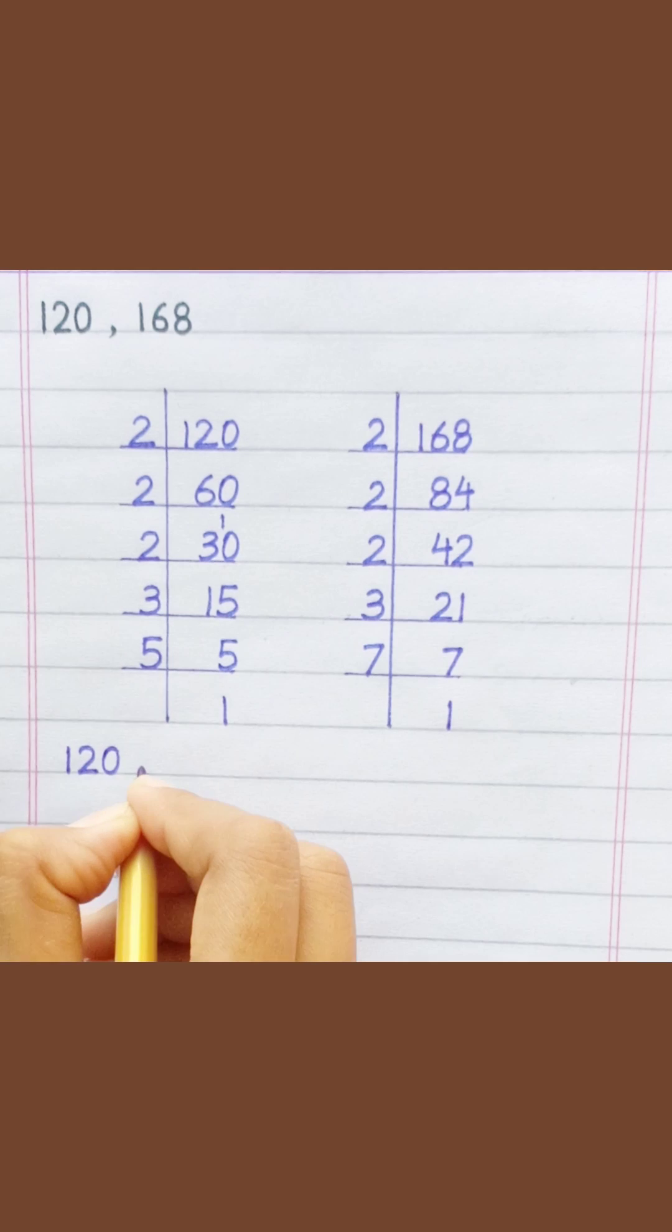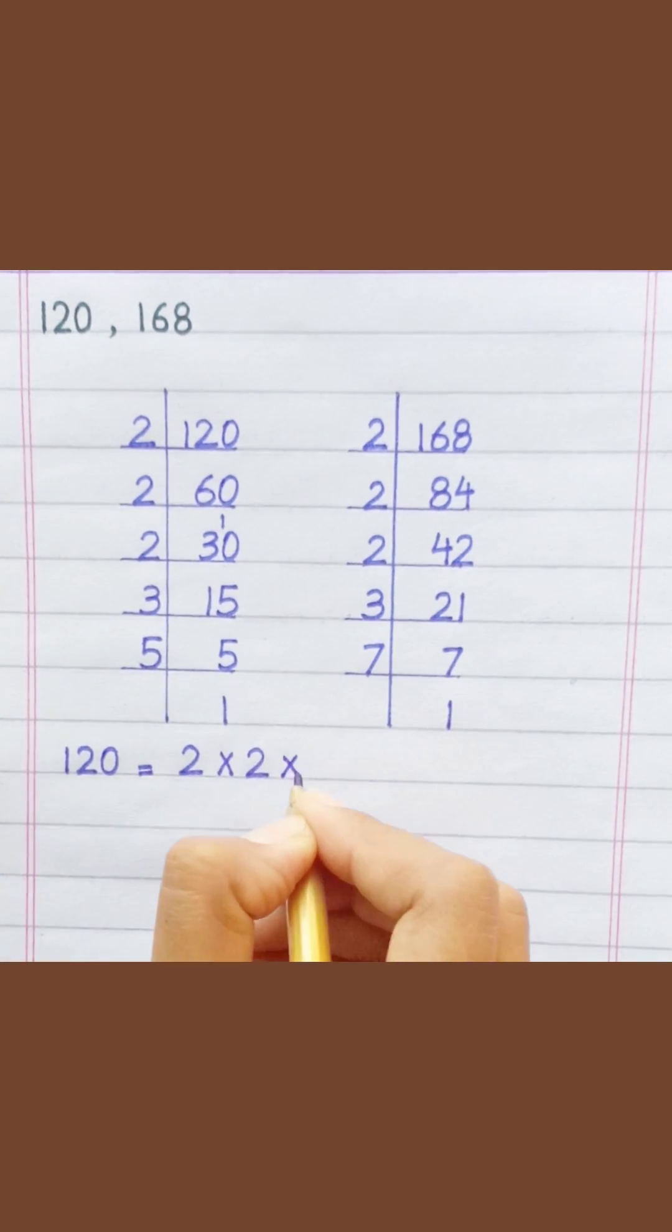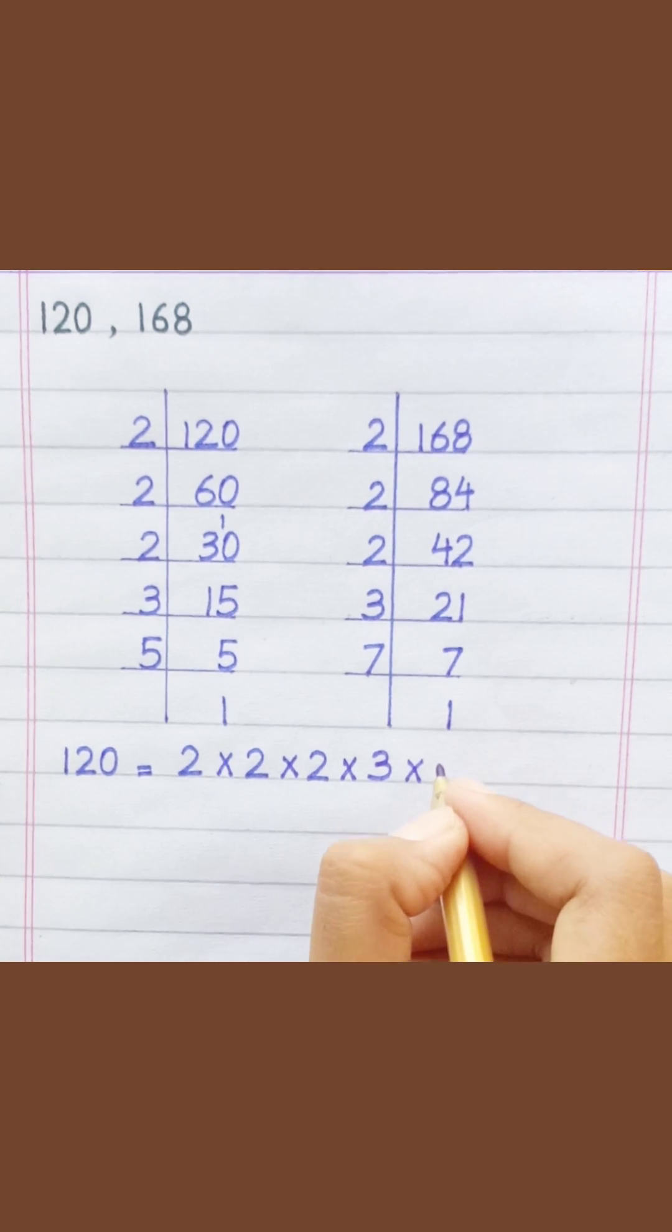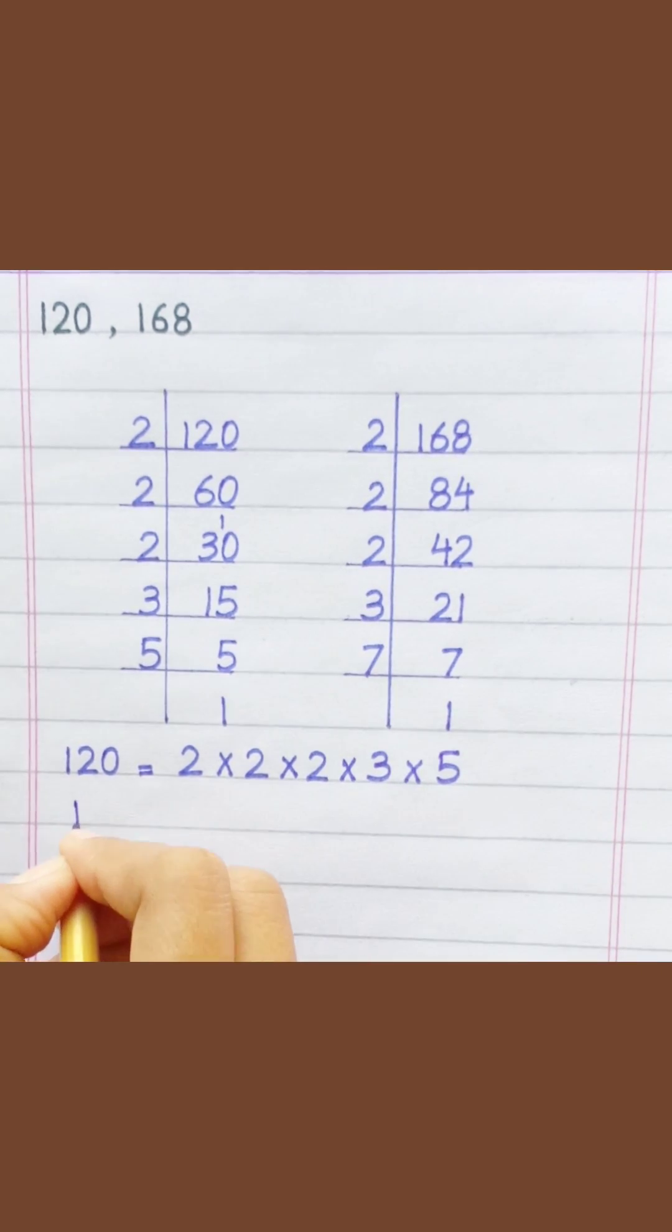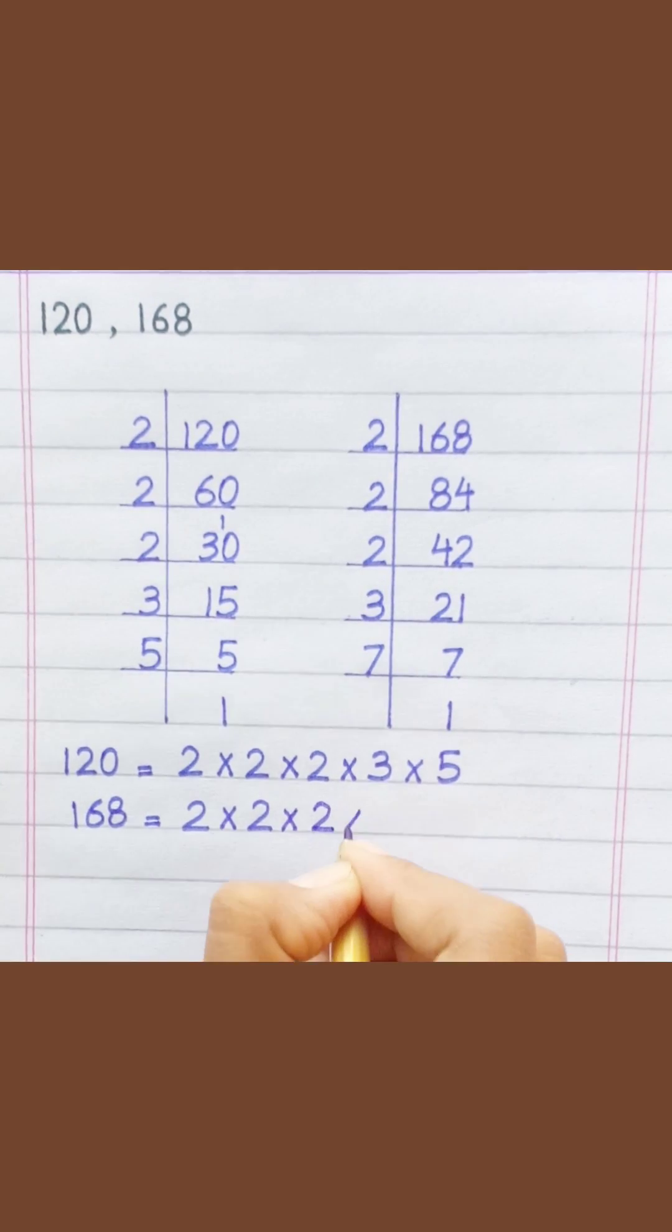One hundred twenty equal two multiply two multiply two multiply three multiply five. One hundred sixty-eight equal two multiply two multiply two multiply three multiply seven.